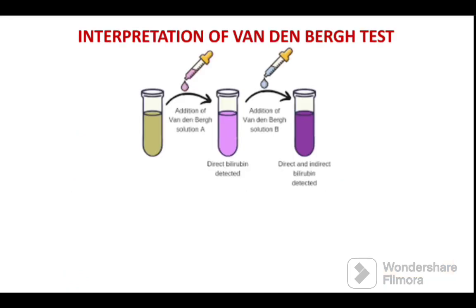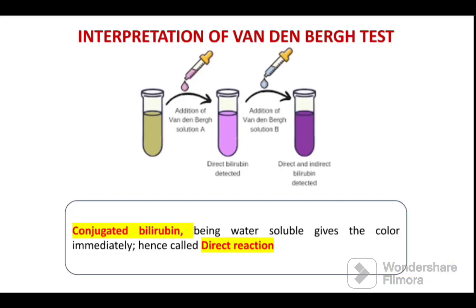How to interpret this Vandenberg test? If conjugated bilirubin reacts with this Vandenberg reagent, being water soluble, it gives the color directly. That is why it is called as direct reaction. When conjugated bilirubin reacts with Vandenberg solution, purple color is immediately seen — that is why it is called as direct reaction. The color is seen immediately because conjugated bilirubin is water soluble.